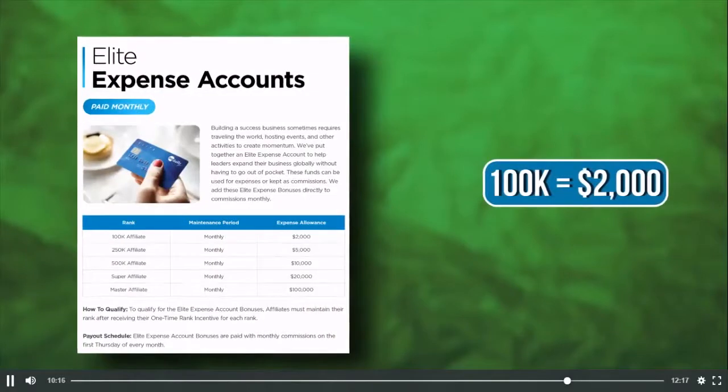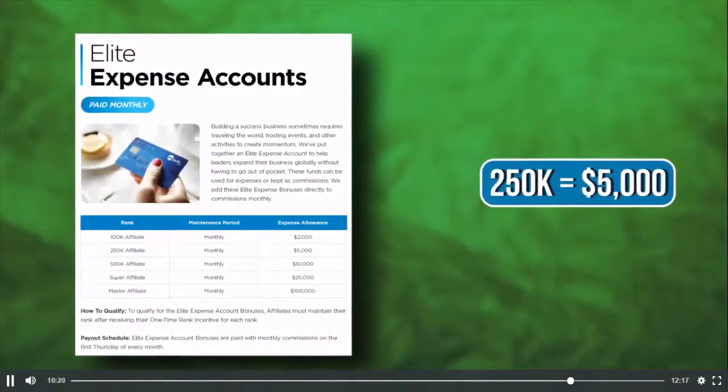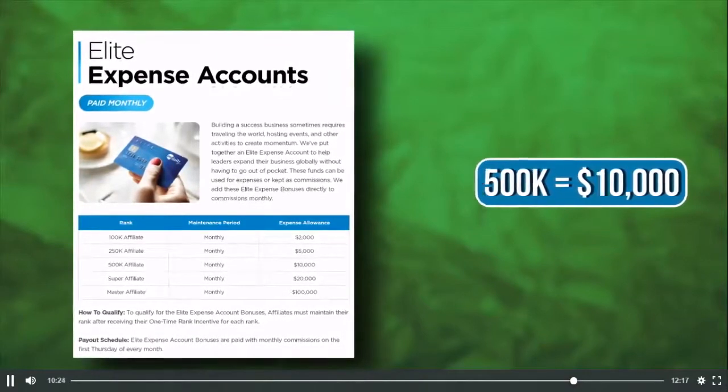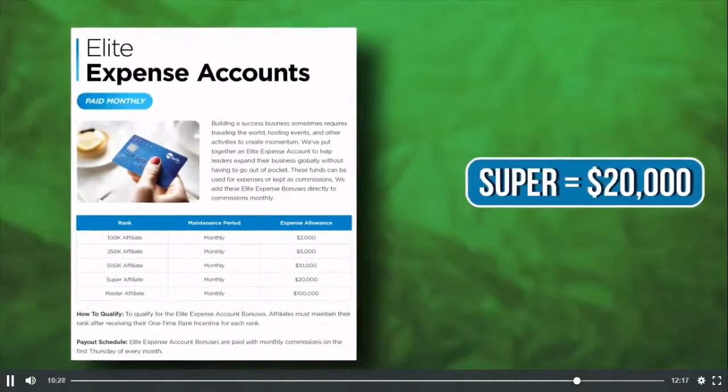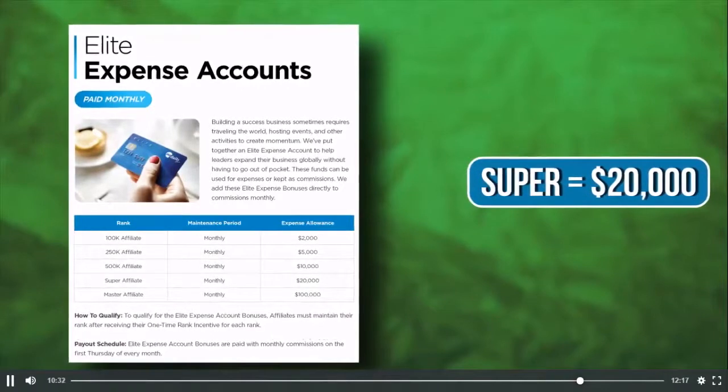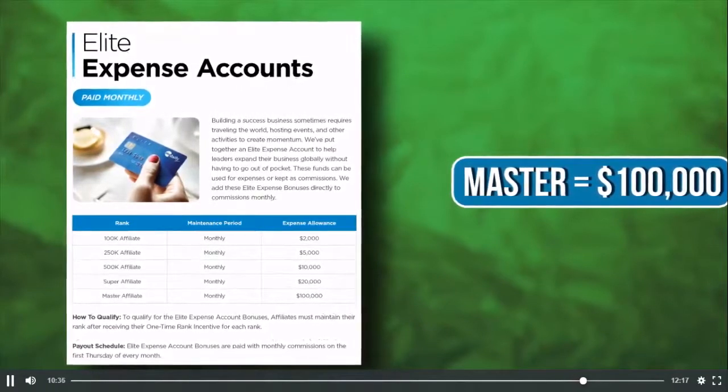Being in the field as a network marketer for the last 10 years, I understand that building a successful business sometimes requires traveling the world, hosting events, and other activities to create momentum. As you develop a bigger organization, we've put together an elite expense account to help you expand your business around the world without going out of pocket. The funds can be used for expenses or kept as commissions. Elite expense account bonuses start at the 100K affiliate rank: 100K is $2,000 per month, 250K is $5,000, 500K is $10,000, super affiliate is $20,000, and master affiliate — the top rank — is $100,000 per month.